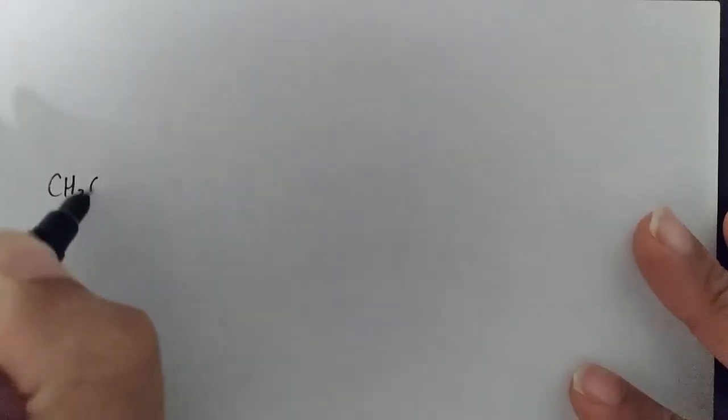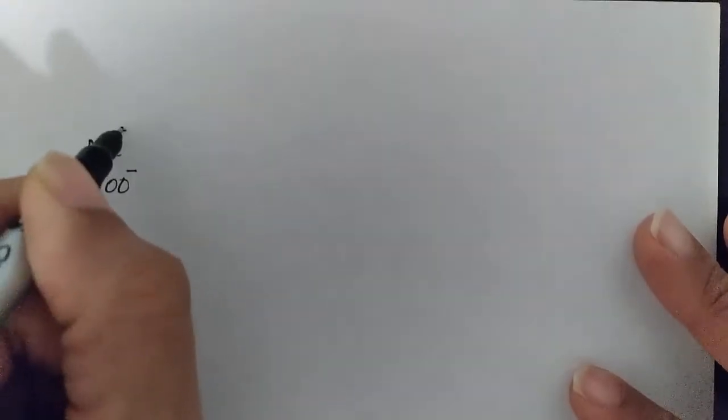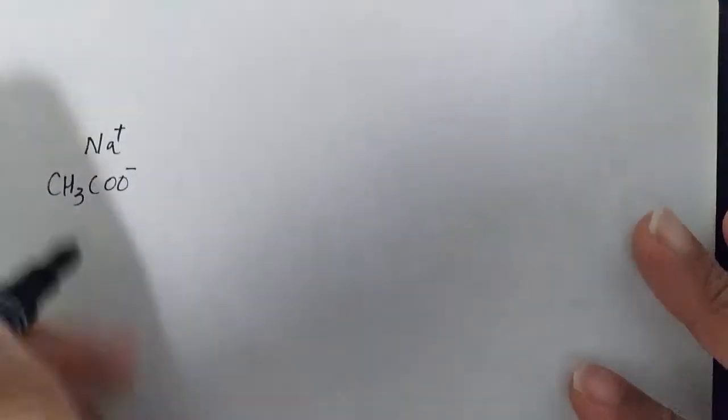Once we recognize the sodium is just the counter ion, this is what we have: CH3COO-. Again, the sodium is just a neutralizing spectator ion.